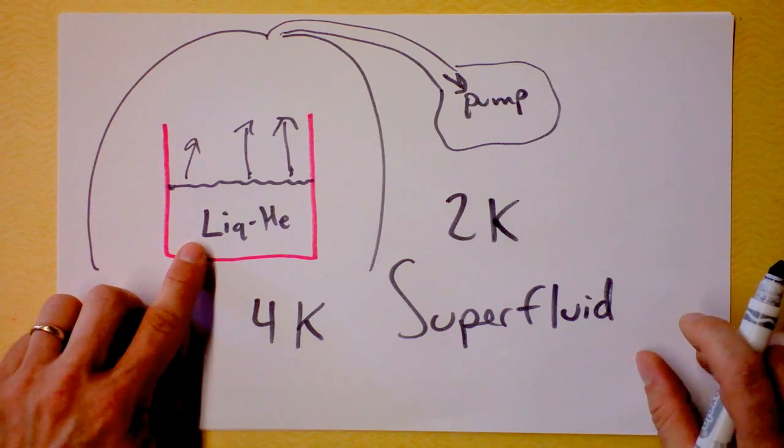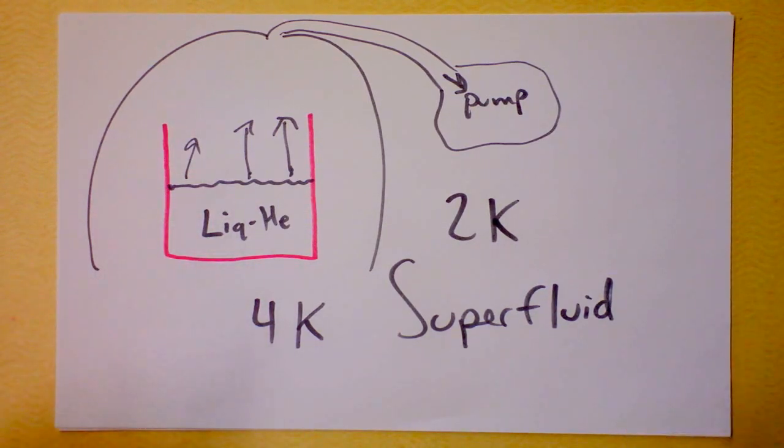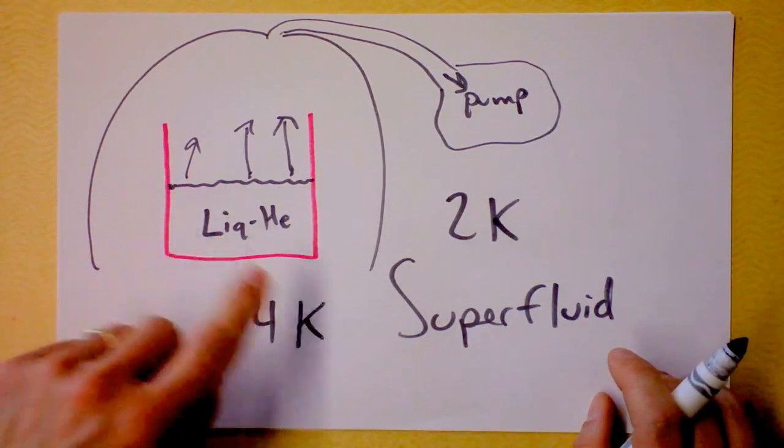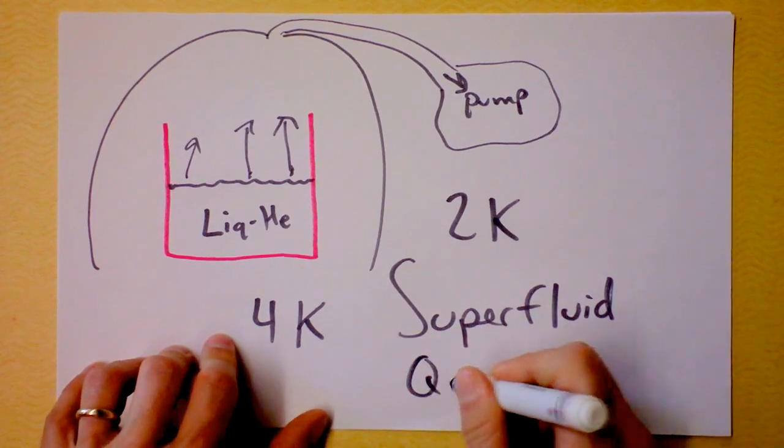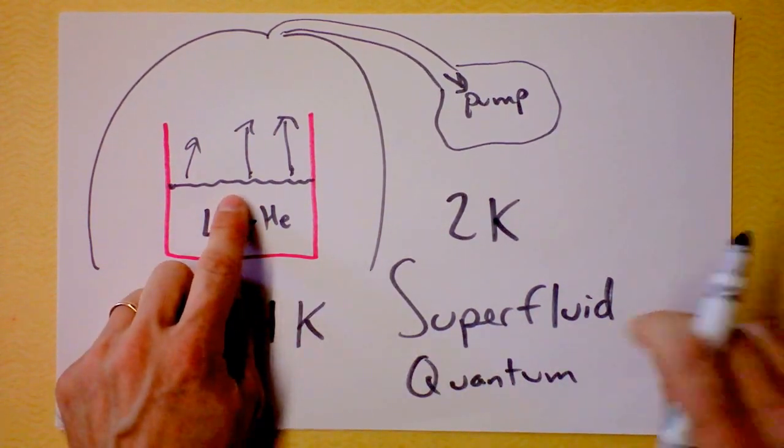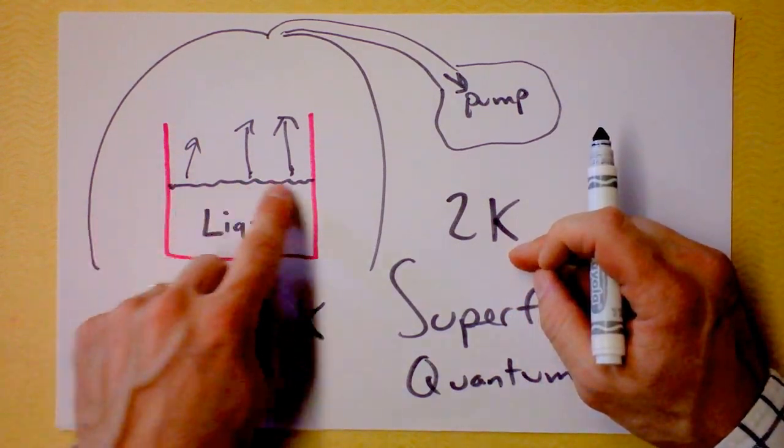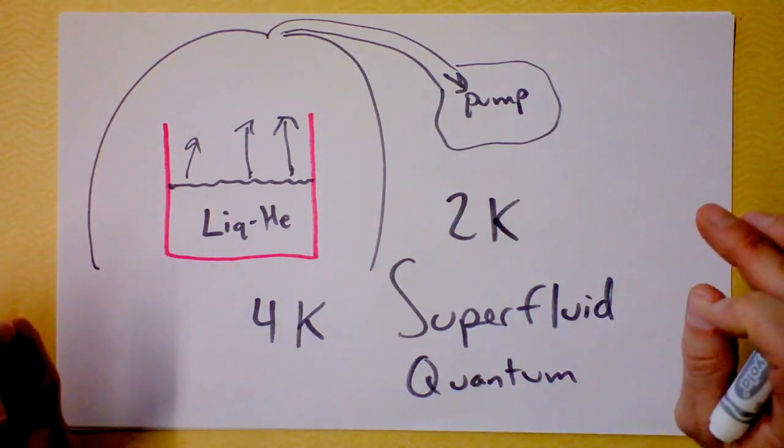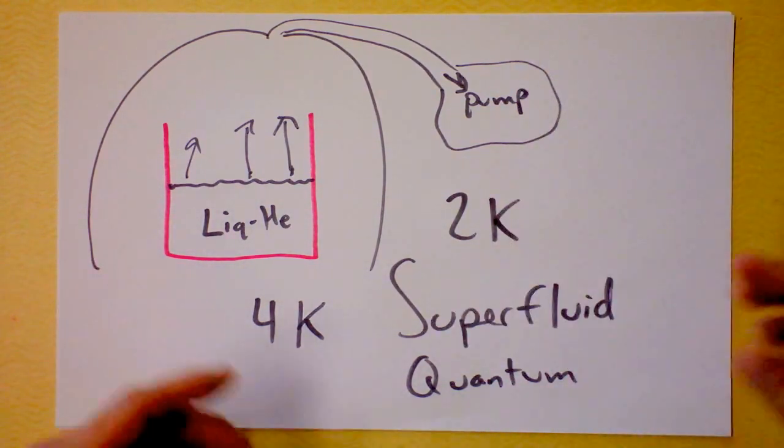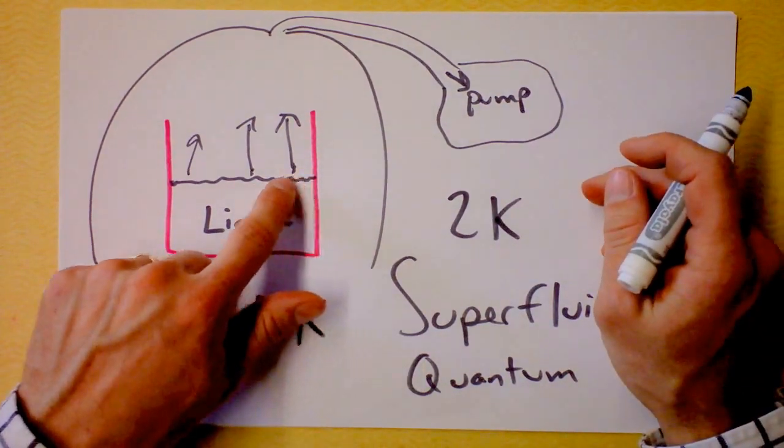It also has no or rather infinite thermal conductivity. That means that every part of the liquid helium has to be the same temperature all at the same time. This is rather a quantum effect. So immediately upon reaching the temperature where it goes superfluid, the boiling stops because it's all at the same temperature. Boiling requires a localized place where something is boiling out of. So it immediately gets perfectly smooth.